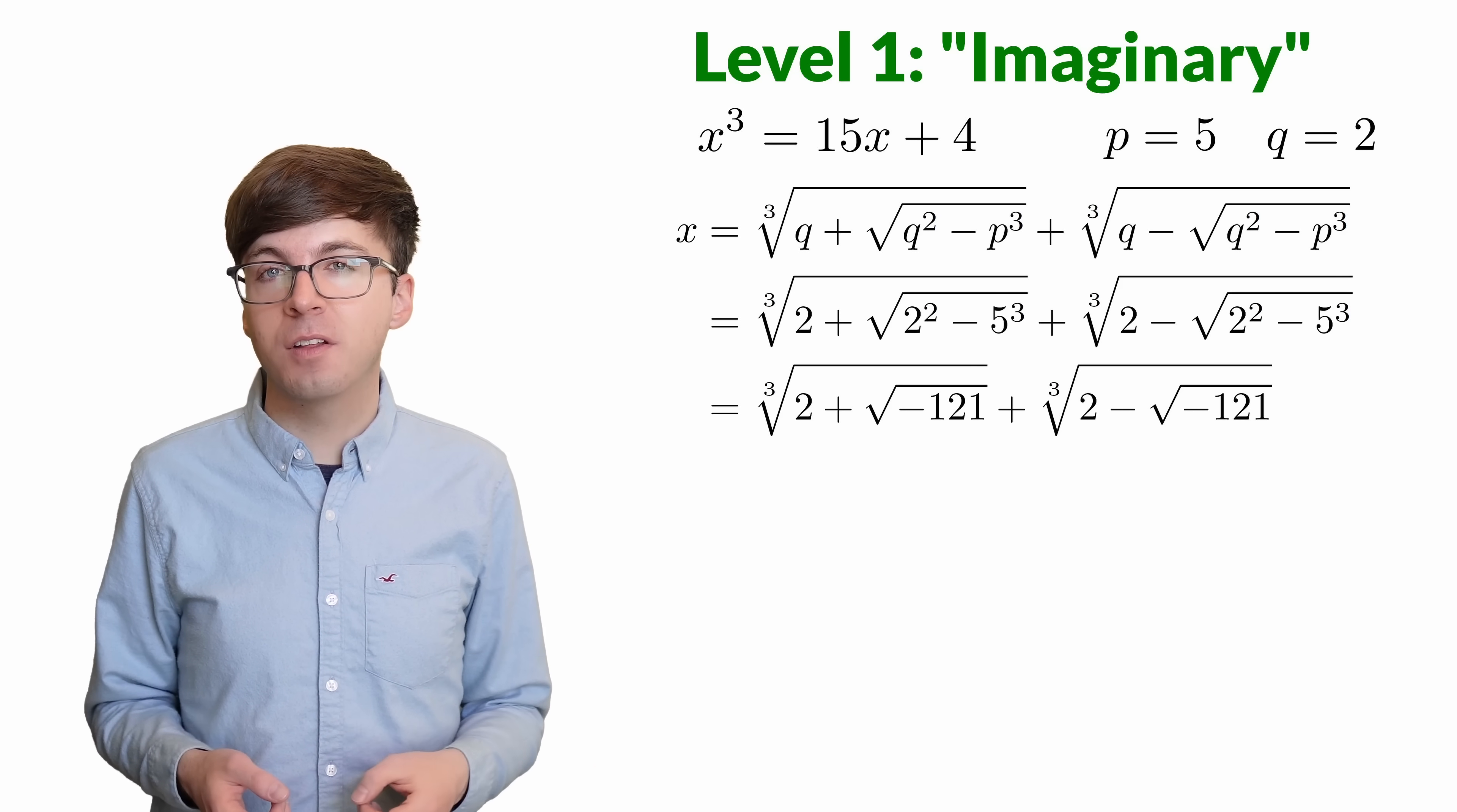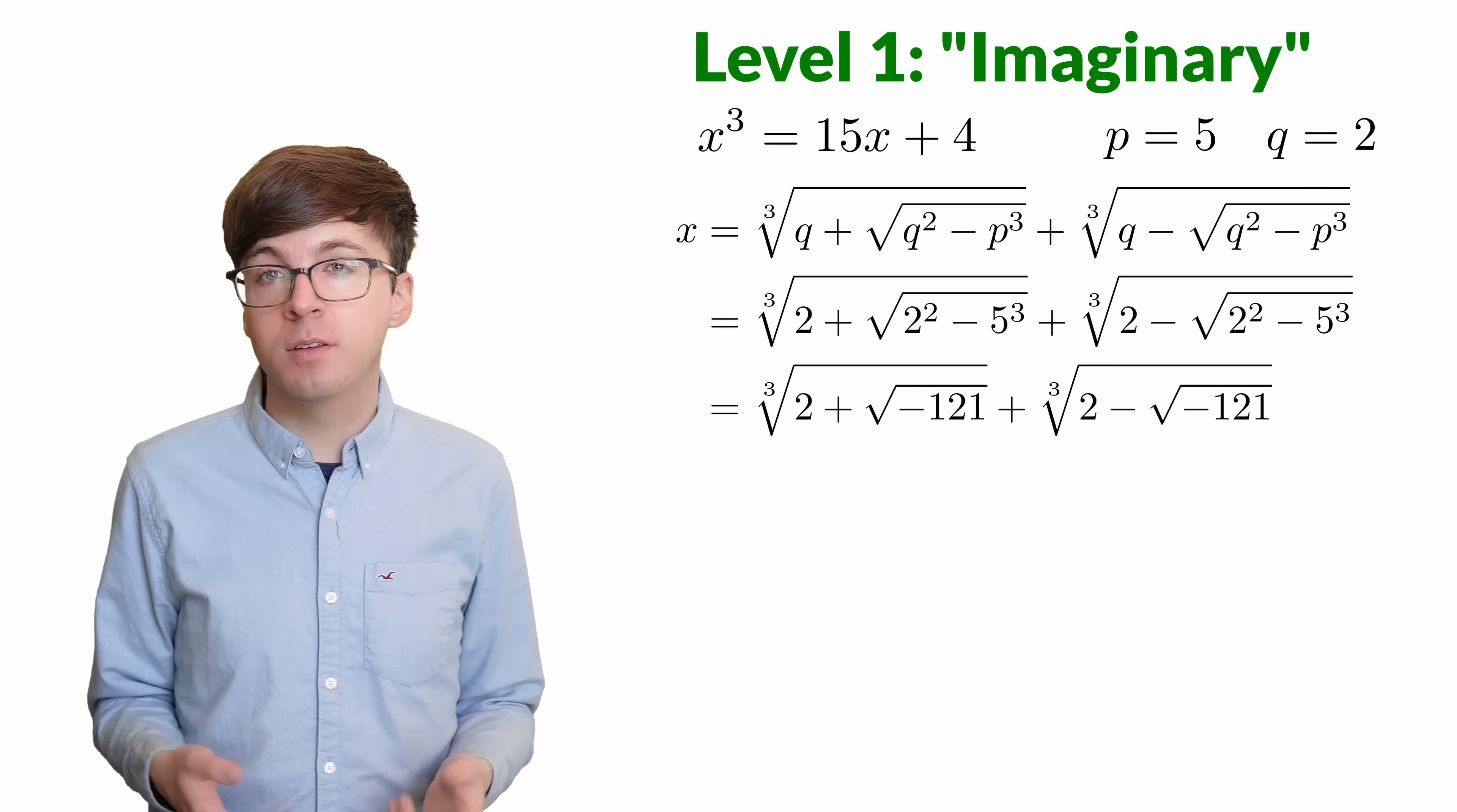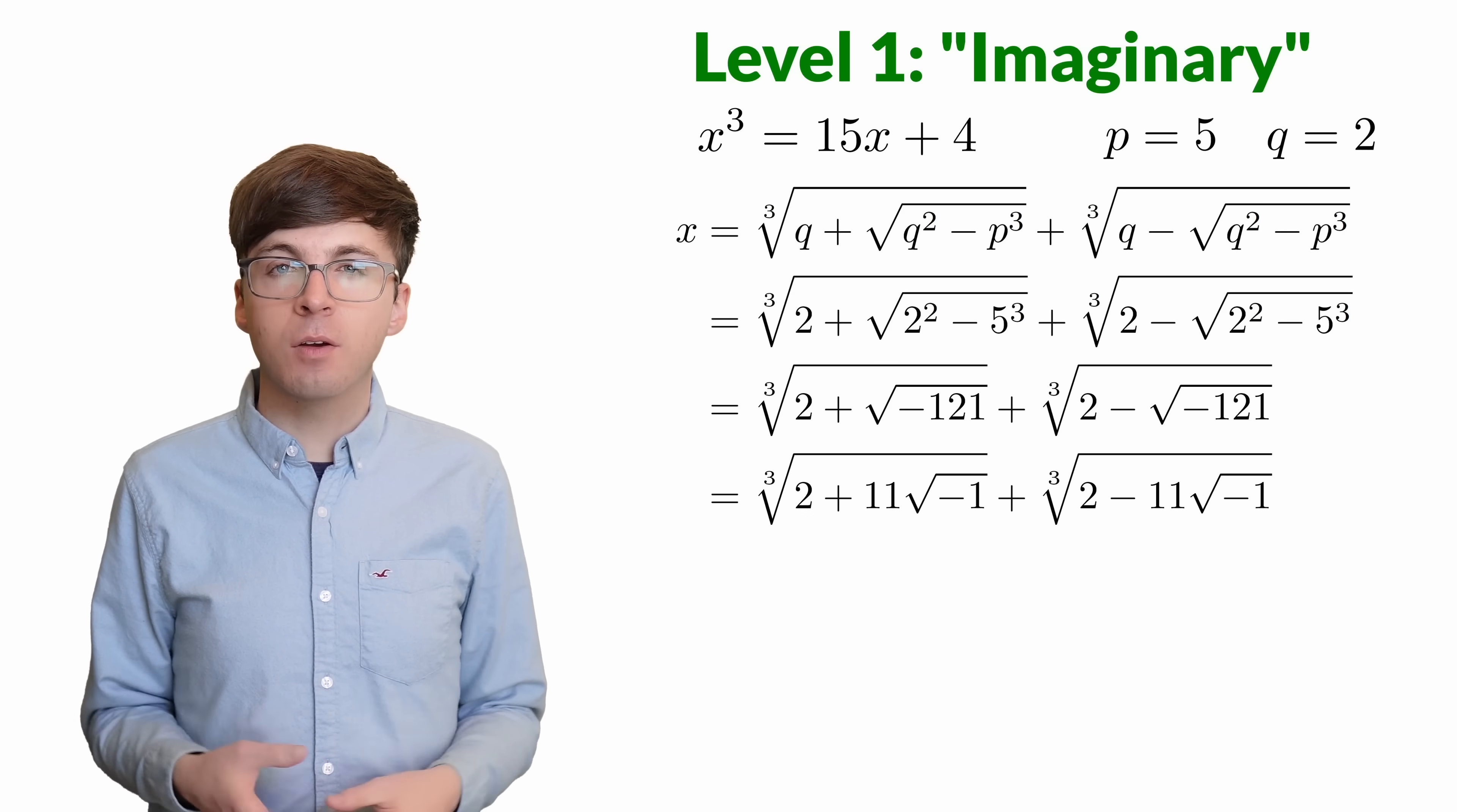But Cardano didn't give up when he saw this. He imagined that that square root of a negative could work out, an imaginary number. And hopefully the rest of the calculation works out in the end. The square root of 121 is 11, but then we have the square root of negative 1. Let's try this calculation.